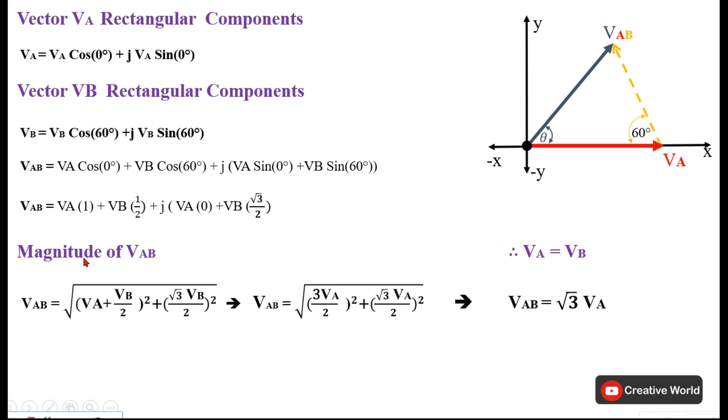Now for the magnitude, we will use this formula. We will square the sum of horizontal component as well as vertical components and take their square root. So VAB will be the square root of horizontal component squared plus vertical component squared. By solving this equation, we found out VAB equal to square root 3 VA.